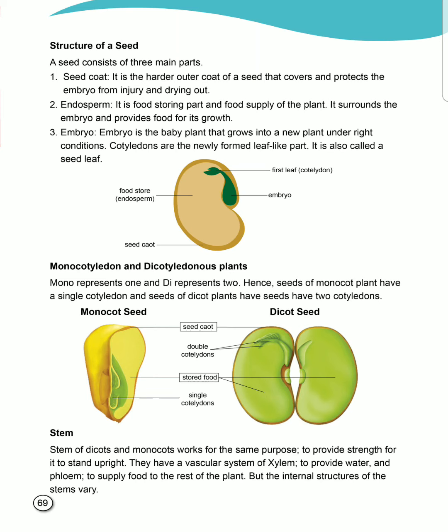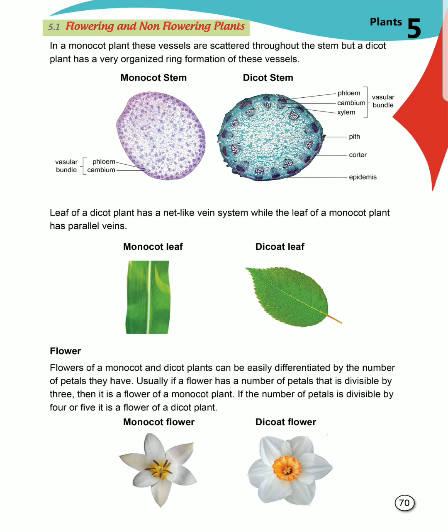Both have a vascular system of xylem and phloem, which are tissues. Xylem functions to provide water, and phloem functions to supply food to the rest of the plant. However, if we talk about the internal structure of the stems, they are different. In a monocot plant, these vessels are scattered throughout the stem, but a dicot plant has an organized ring formation of these vessels.